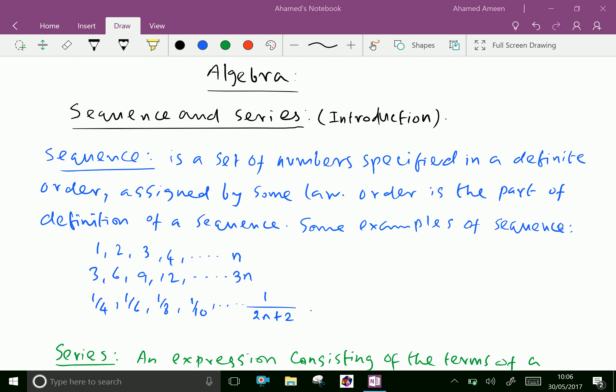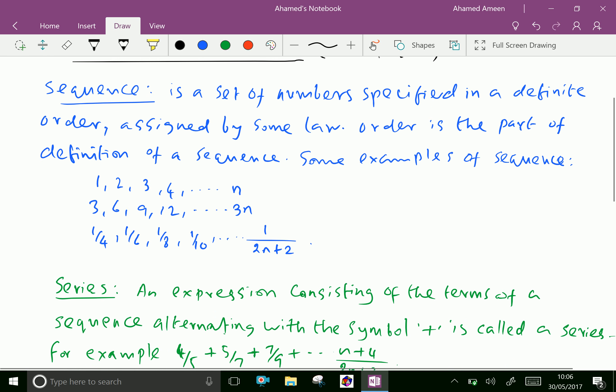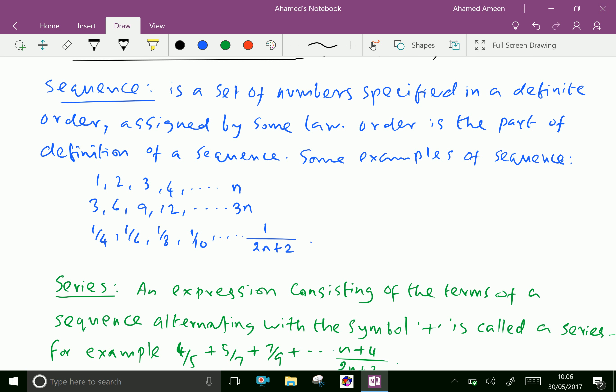Some examples of sequence are: 1, 2, 3, 4, dot dot dot n. Second one, 3, 6, 9, 12, dot dot dot 3n. One over 4, one over 6, one over 8, one over 10, dot dot dot one over 2n plus 2.